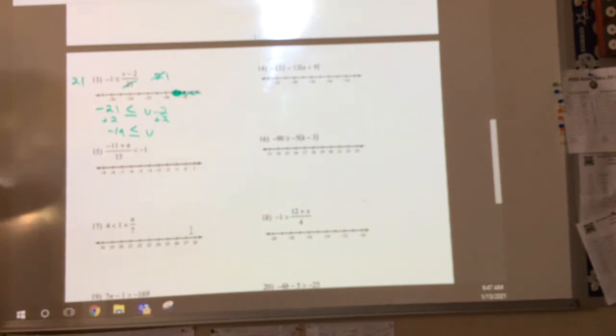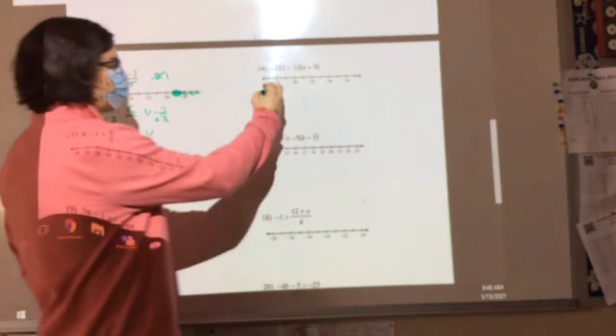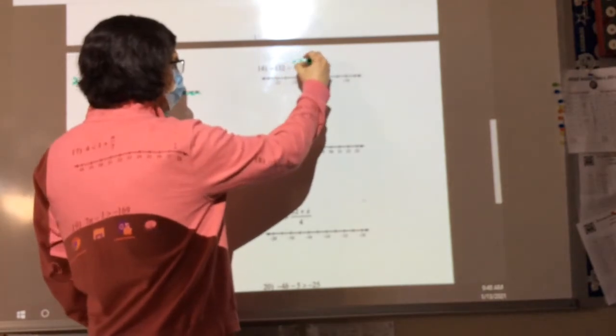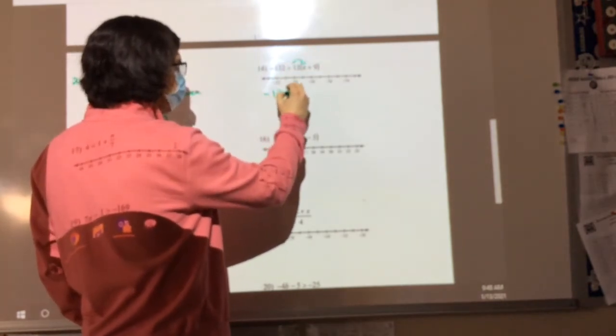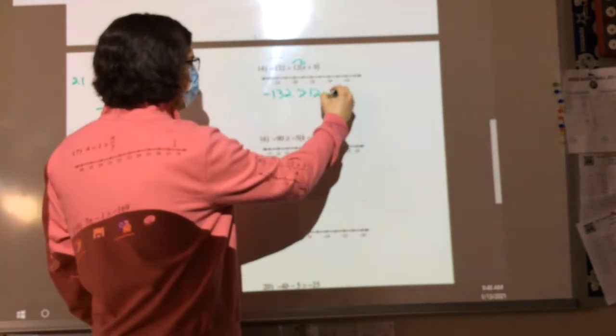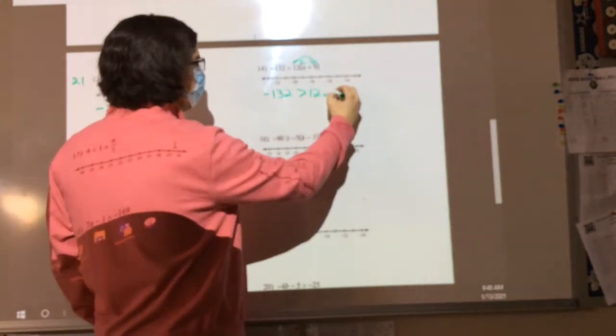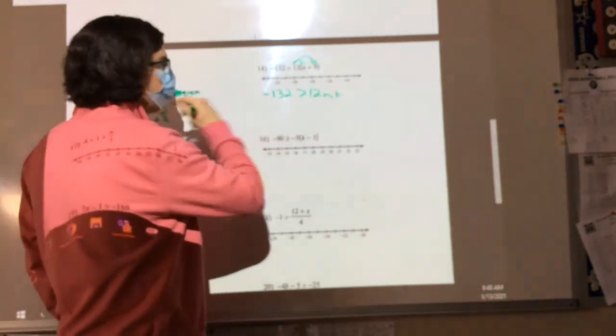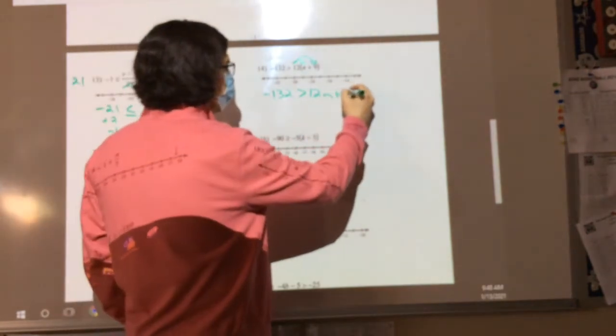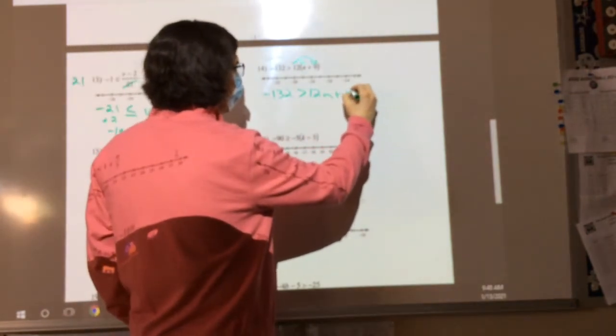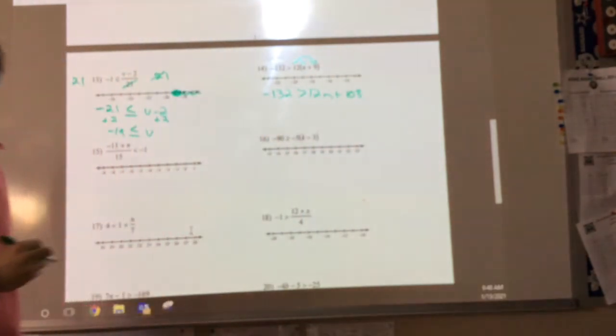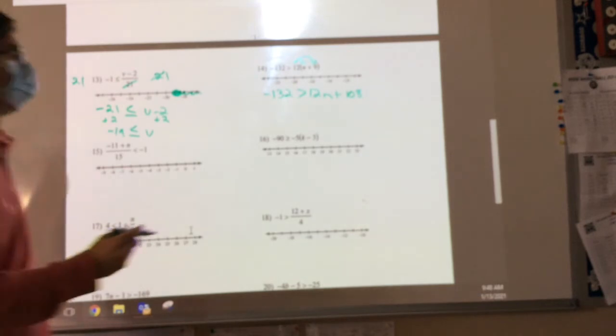Step two, what I'm about to show you on this next problem is the new piece. Okay? We're going to solve this one out. So I'm going to distribute my 12. I'm going to have negative 132 is greater than 12n plus... What's 12 times 9? 108? Good job, thank you for that. All right, what's my next step? Rosie. Good job.